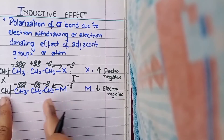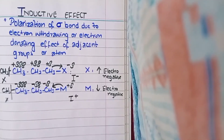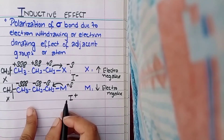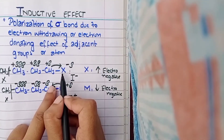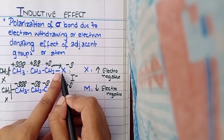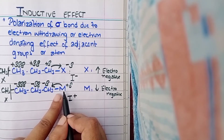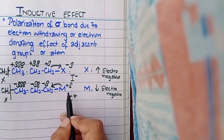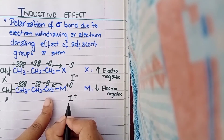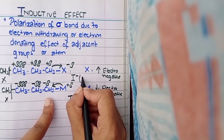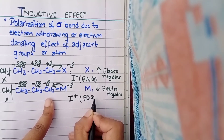This is the positive inductive effect. There is a funny thing about chemistry: the entity that snatches electrons is labeled as negative — like X, which withdraws electrons, is said to show negative inductive effect. And M, which donates electrons, shows positive inductive effect. So in chemistry, the one who takes is called negative and the one who gives is called positive. To summarize: negative inductive effect is shown by electron withdrawing groups, and positive inductive effect is shown by electron donating groups.